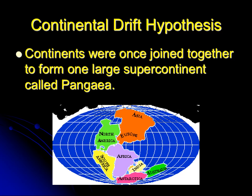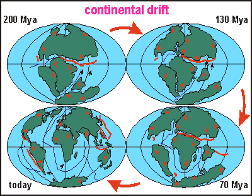The continental drift hypothesis states that the continents were once joined together to form one large supercontinent, referred to as Pangaea. Here's a picture of what the continents might have looked like at one point in earth's history.